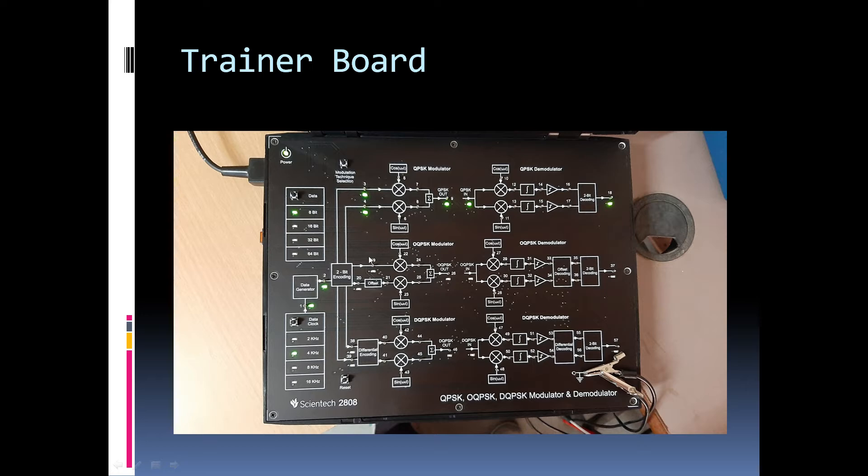Other than these, there are blocks like data block which one can see on the top left. Then you have a data clock block and then you have a data generator block and also a one cross two demultiplexer block. The data block sets bit patterns of 8-bit, 16-bit, 32-bit and 64-bit from which one can select the desired pattern through a push button switch. The data clock block can set the data rate and it can be 2 kHz, 4 kHz, 8 kHz or 16 kHz which one can select through another push button switch which is kept over there.